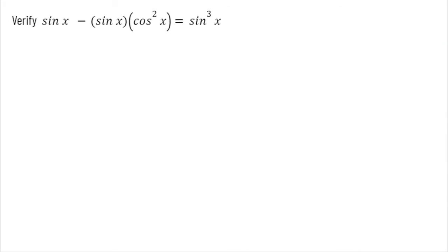Let's try another one. Here we want to verify that sine of x minus sine of x cosine squared of x equals sine cubed. So once again, I cannot move things left to right. I need to start with one side to make it look like the other. So what am I going to do? Well, on the left-hand side, the first thing I notice is that both terms have a sine in common, so I'm going to factor out that sine of x.